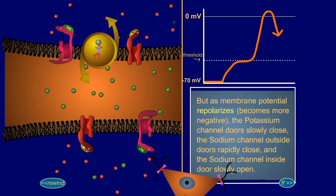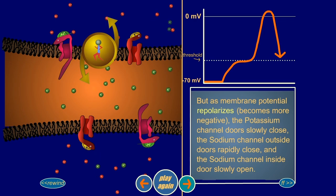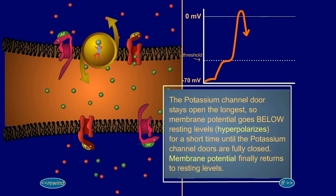But as membrane potential repolarizes, becomes more negative, the potassium channel doors slowly close, the sodium channel outside doors rapidly close, and the sodium channel inside doors slowly open. The potassium channel door stays open the longest, so membrane potential goes below resting levels, hyperpolarizes, for a short time until the potassium channel doors are fully closed. Membrane potential finally returns to resting levels.